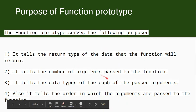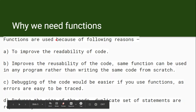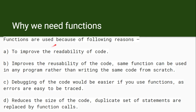Functions are used to improve the readability of the code. For example, in the Armstrong number program, there are different functions like square, reverse digit, and check Armstrong number. Similarly in the NPR and NCR programs, there are factorial, NPR, and NCR functions. Using functions improves code readability by organizing code into logical modules.